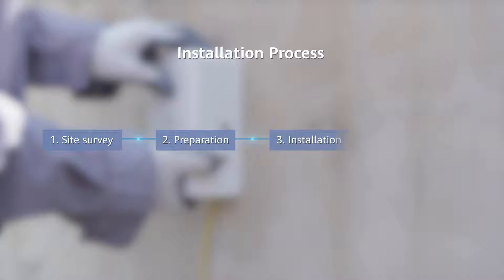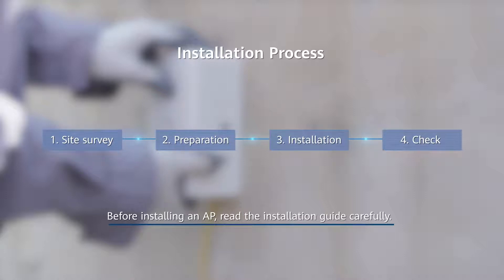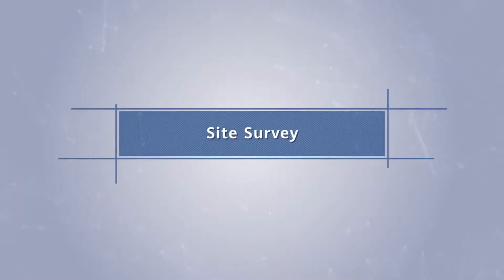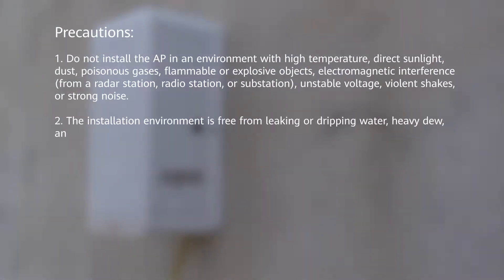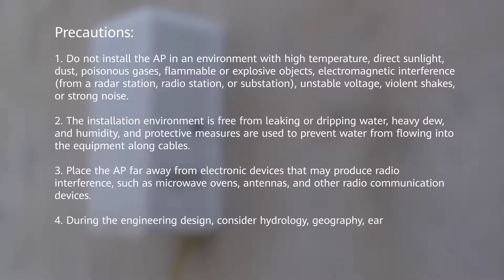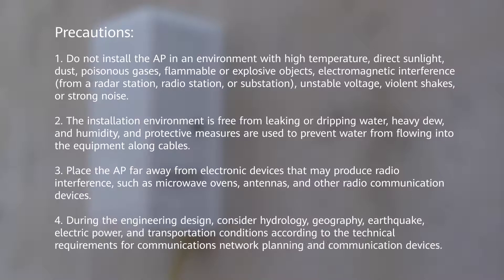Before installing an AP, check the type and specifications of the installation scenario to determine the mounting method and required materials. This video provides instructions on how to mount a wall plate AP on a concrete wall using expansion screws.